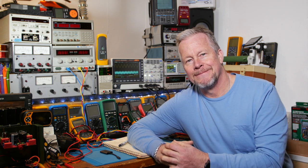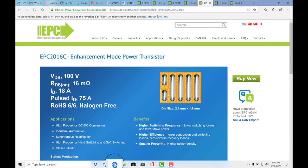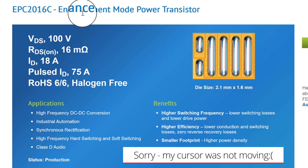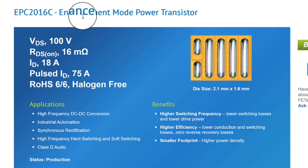The first thing we want to do is go find a SPICE file to download. I've gone to the Efficient Power Conversion website, EPC, and found the EPC2016C enhancement mode power transistor. You place voltage on the gate to turn it on. It's VDS 100 volts, RDS on 16 milliohms, ID 18 amps, 75 amps pulse current. Applications include high frequency DC-DC conversion and class D audio.